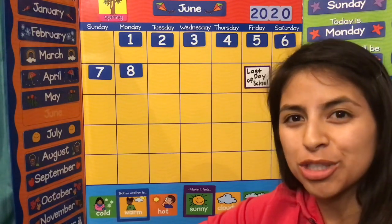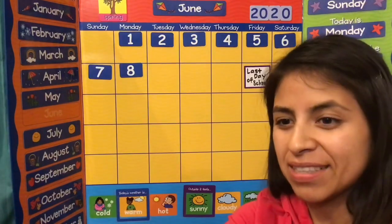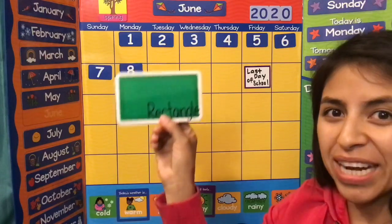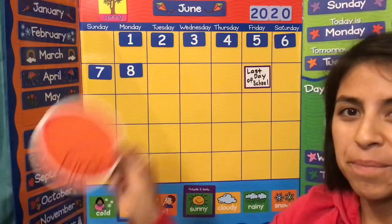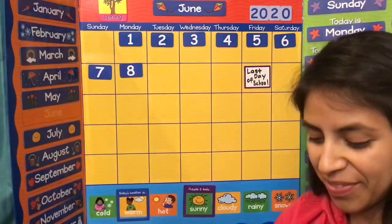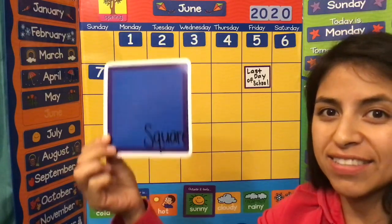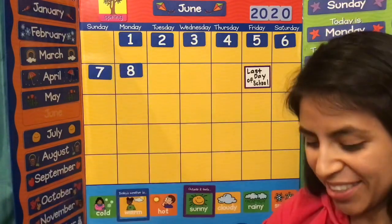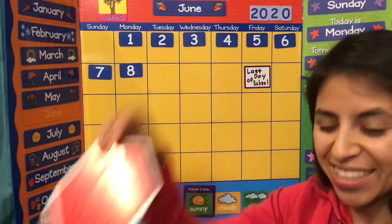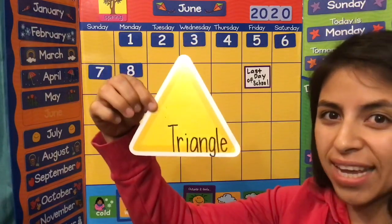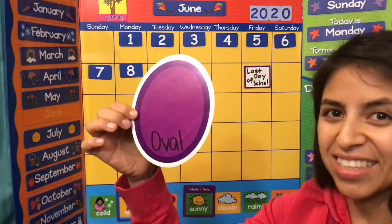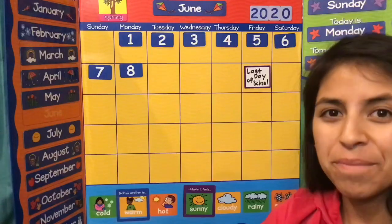Great work. And with that, we can move on to review. Today we will review shapes. This is a rectangle. This one doesn't have any sides — it is a circle. This shape has four sides that are the same — this is a square. This shape has six sides — this is a hexagon. This shape has three sides — it is a triangle. And our last shape has no sides — it is an oval. Great job, TK.